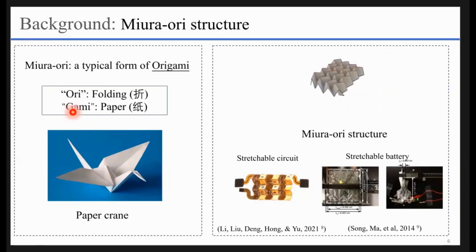Miura-ori is a typical form of origami. Origami is an Asian art. Ori means folding, and gami means paper. So origami means the art of paper folding. Origami has a lot of shapes and patterns, and Miura-ori is just one of them.